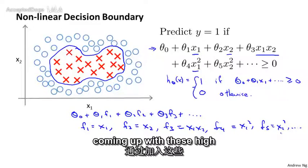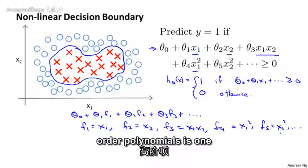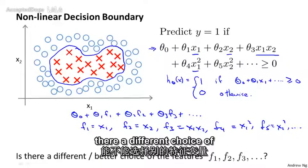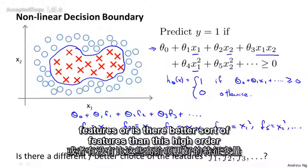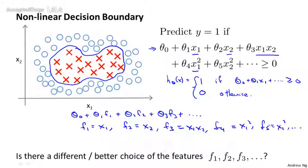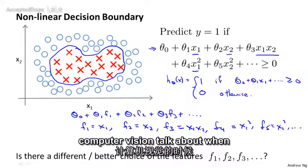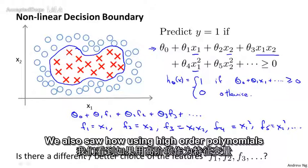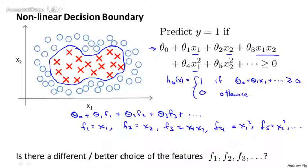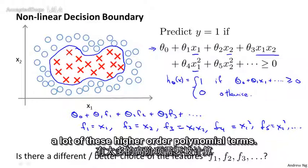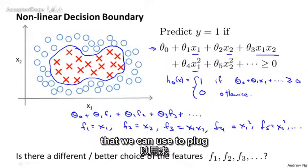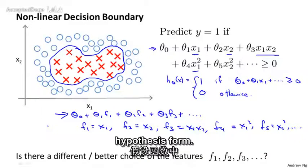We've seen previously that coming up with these high-order polynomials is one way to come up with lots more features. But the question is, is there a different choice of features? Or is there a better choice of features than these high-order polynomials? Because it's not clear that these high-order polynomials are what we want. And when we talked about computer vision, when the input is an image with lots of pixels, we also saw how using high-order polynomials becomes very computationally expensive because there are a lot of these high-order polynomial terms. So is there a different or better choice of features that we can use to plug into this sort of hypothesis form?